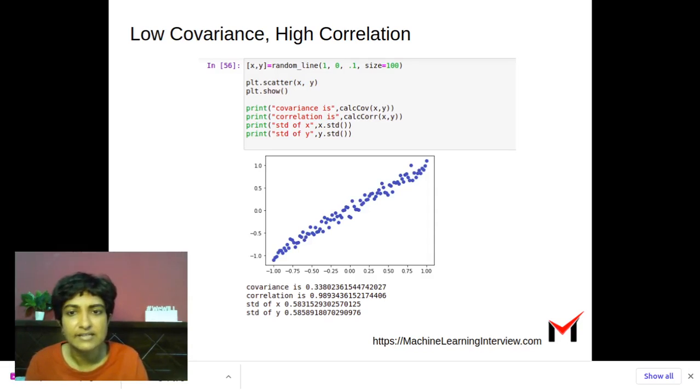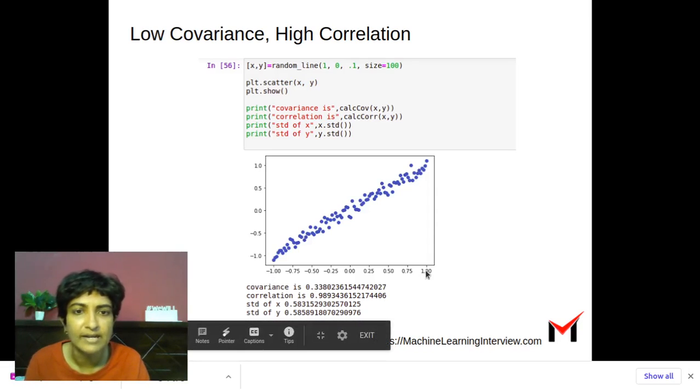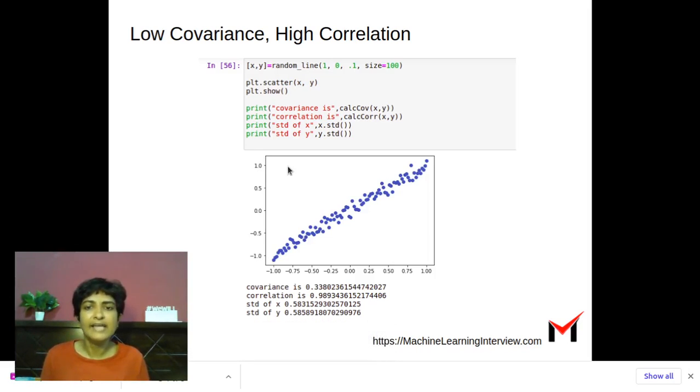So if you see here, the value of x is between minus 1 and 1. Value of y is between minus 1 and 1, and it's not very spread out. And hence, the covariance value is low. It's still positive, indicating a positive relationship, dependence.